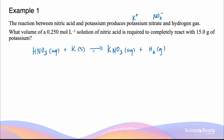Let's check whether this equation is balanced. The number of hydrogens is not balanced — there's only one on the left-hand side while there are two on the right. So we add a two in front of HNO₃. By doing this, we've multiplied the nitrate molecules on the left by two, so on the right we must also multiply KNO₃ by two. This makes the potassium unbalanced, which we fix by adding a two in front of potassium. Now all elements are equal in number on both sides.